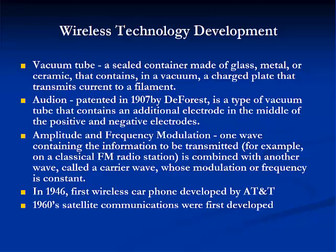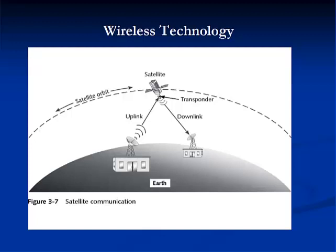In 1946, AT&T Bell Laboratories connected the first wireless car phone to the St. Louis phone network. AT&T called its system the Improved Mobile Telephone Service, or IMTS. IMTS used cells — areas served by low-power transmitters — which are the basis for modern cell phone technology. In the late 1950s and early 1960s, we saw the first satellite communications. In satellite communications, geosynchronous orbits means the satellites orbit the Earth at the same rate as the Earth turns, remaining in the same place relative to Earth, often at the equator. An uplink is a broadcast from an Earth-based transmitter to an orbiting satellite, where a transponder receives the uplink and transmits the signals to another Earth-based location in a downlink.